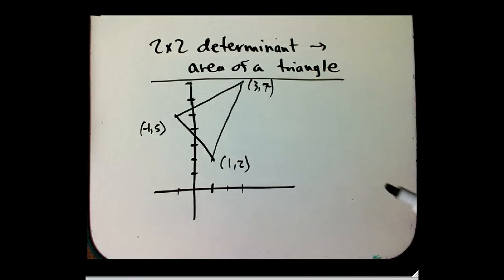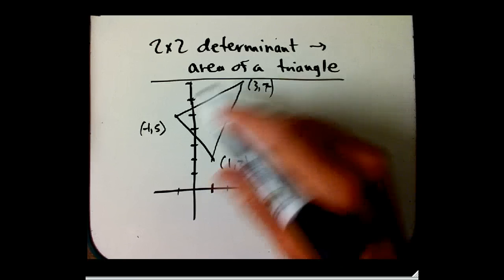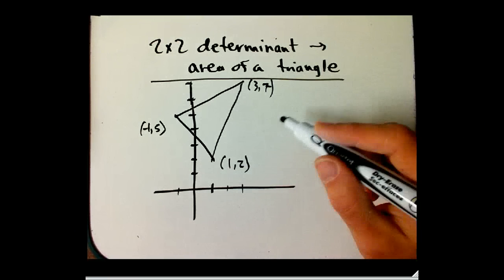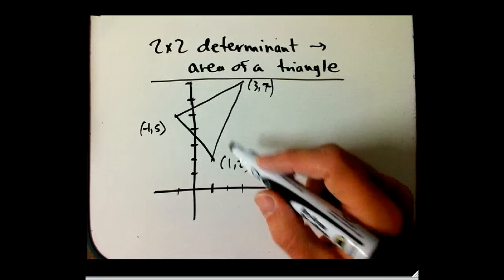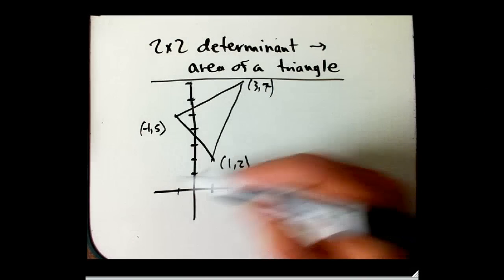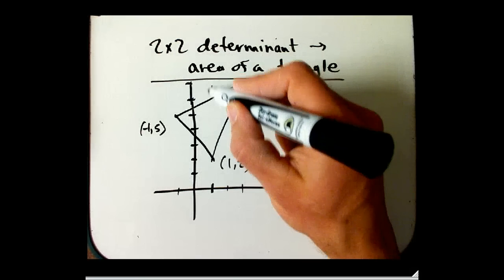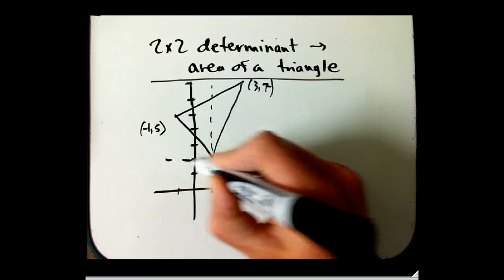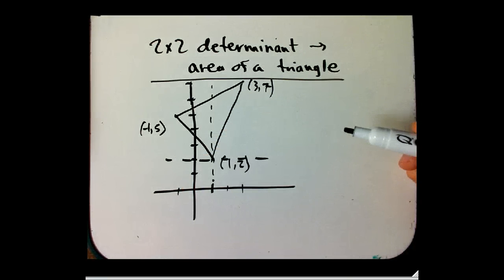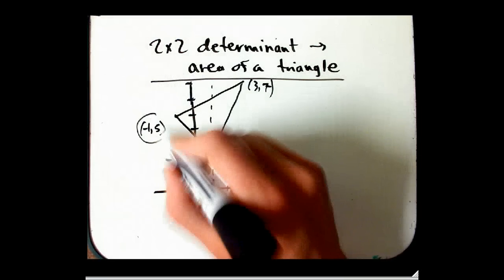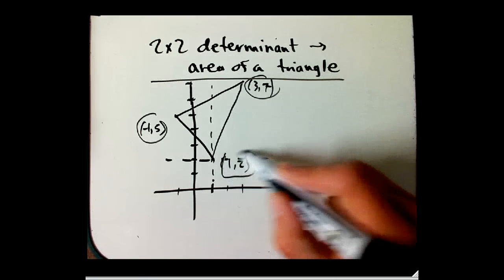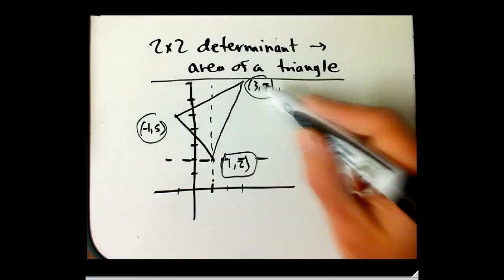And in our class we discovered that there was a two-step procedure for doing this. What we can do is first recast this so that one of the vertices is at the origin, basically move the coordinate system so that one of the vertices is at the origin. What that does is it just subtracts the coordinates of this point, which we're now declaring to be zero, from these guys.